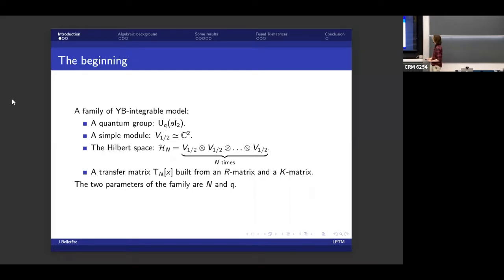Then in order to construct a spin chain, you take a simple module for the quantum group. In our case, it's V_{1/2}. So it's the simplest, non-trivial one. Then you use it to build a Hilbert space, H_n, which is just V_{1/2} tensored with itself n times.